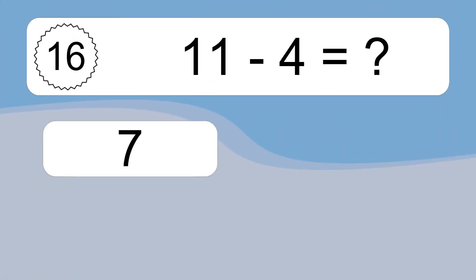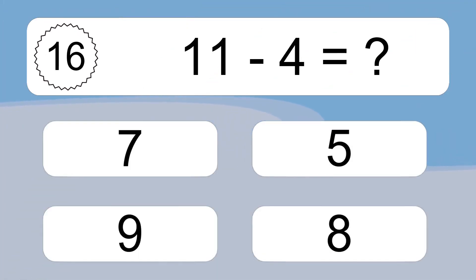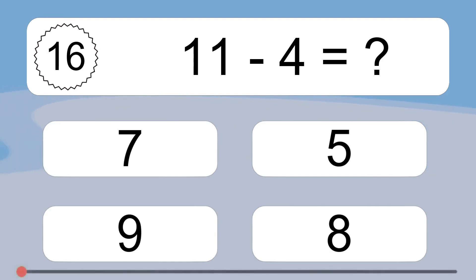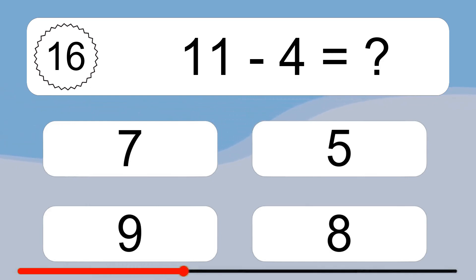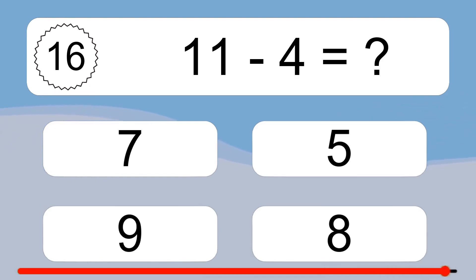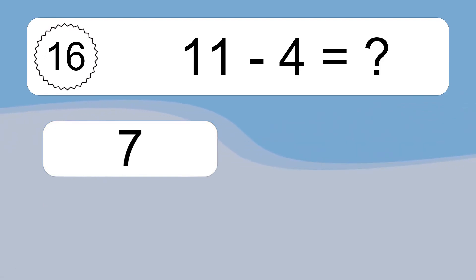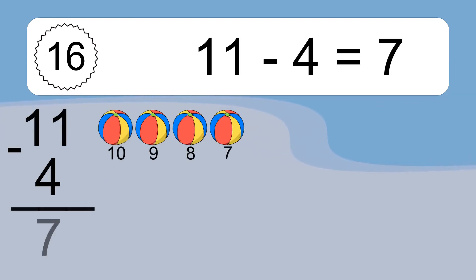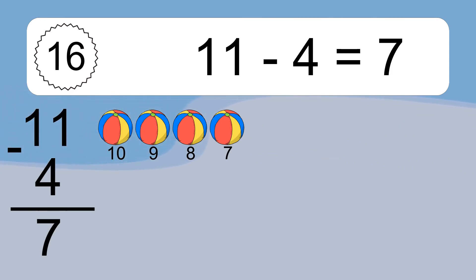11 minus 4 equals what? 11 minus 4 equals 7. Let's count it: 10, 9, 8, 7.